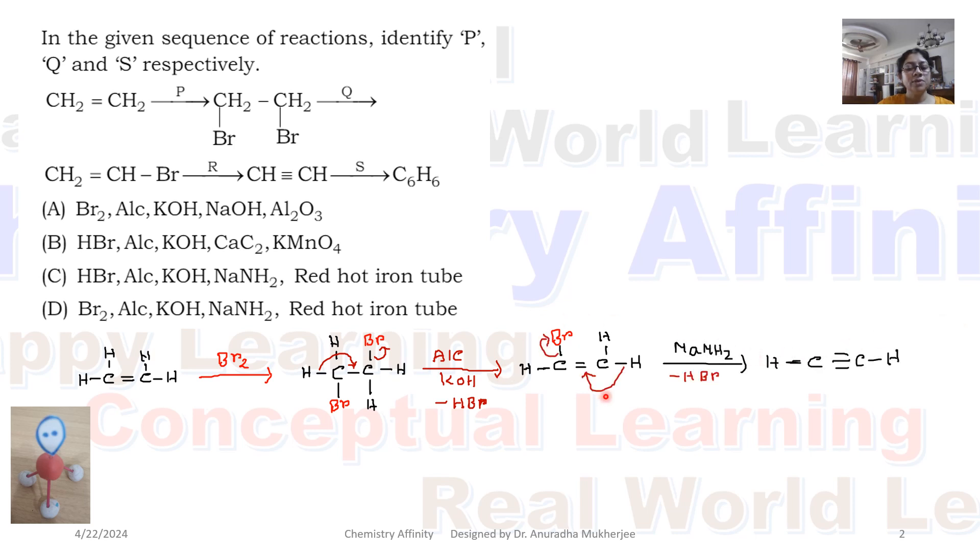Now when this compound is treated with sodamide, we need a very strong base for the second elimination reaction. We will be getting a triple bond means alkyne. So it is acetylene.